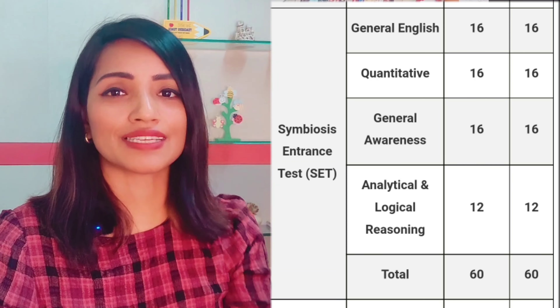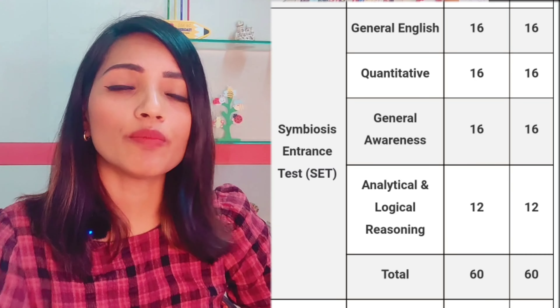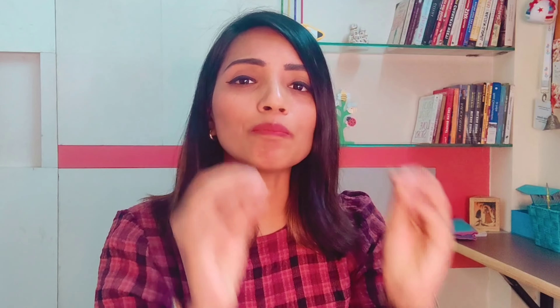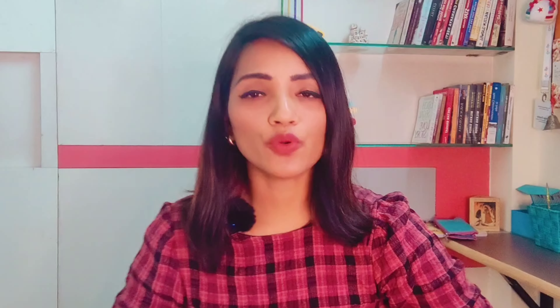Now let me explain the SET exam paper pattern. You get 1 hour. It is an MCQ format. Total marks is 60. The syllabus is divided as follows: General English — 16 questions, 16 marks. There is no negative marking. Then comes Quantitative — 16 questions, 16 marks. General Awareness — 16 questions, 16 marks. And Analytic and Logical Reasoning, which is your LR aptitude — 12 marks. So the complete 60-mark paper is divided into 16, 16, 16 and 12.